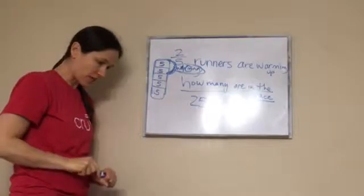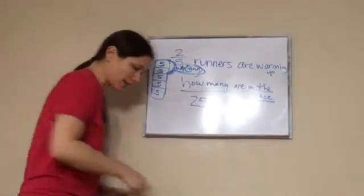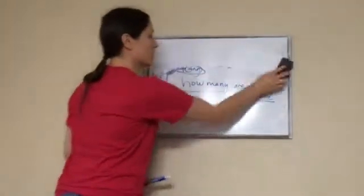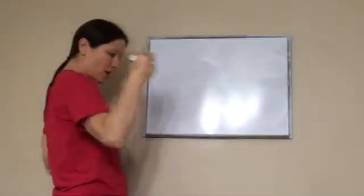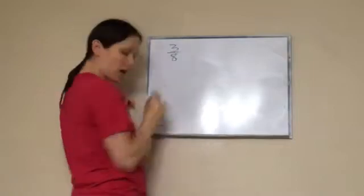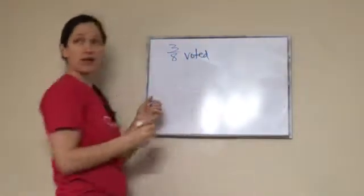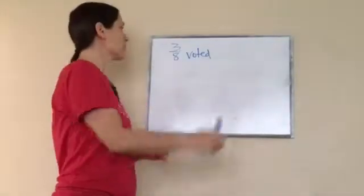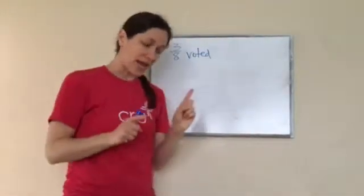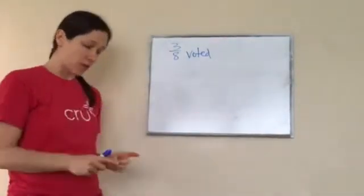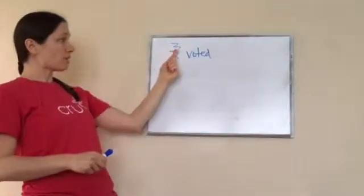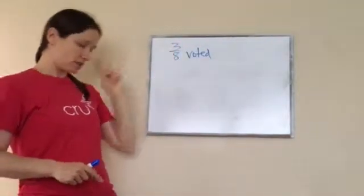You get it? Okay, let's try another one. Here's what it says: Three-eighths of the townspeople voted. So how many voted? Three. Three out of the eight. Very good.